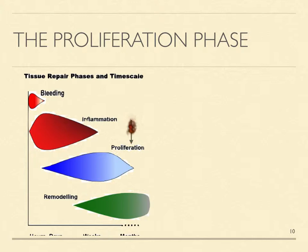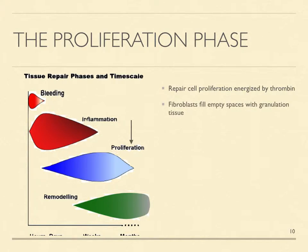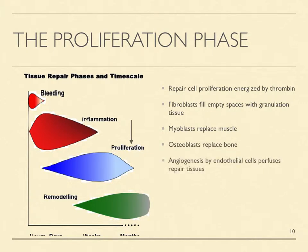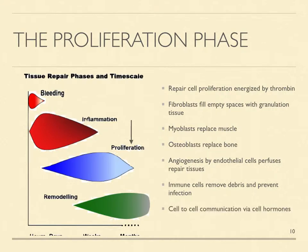The next phase of tissue repair is proliferation, where the arriving repair cells begin thrombin-energized repair activity. Fibroblasts multiply and generate collagen to produce granulation tissue that fills empty spaces. Immune cells phagocytize debris and bacteria and produce immune proteins to prevent infection. Myoblasts produce muscle and osteoblasts produce bone to replace damaged tissues. Angiogenesis, or capillary formation by endothelial cells, perfuses the proliferating repair tissues. The cells release chemokines, cytokines, caspases, prostaglandins, and other cellular hormones to communicate with one another and coordinate their repair activities.